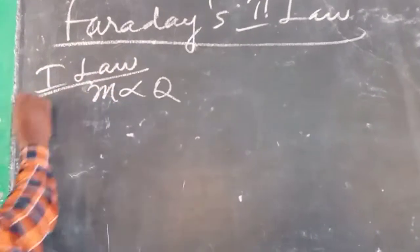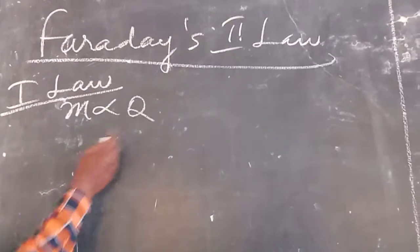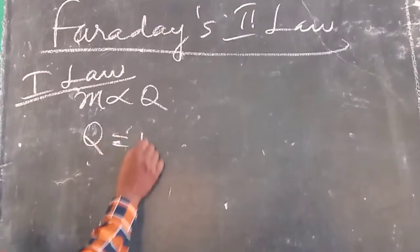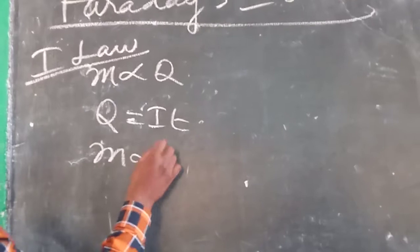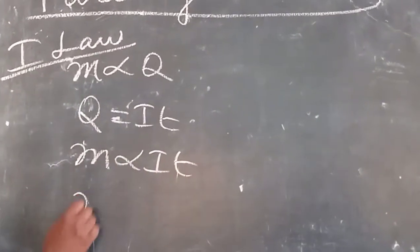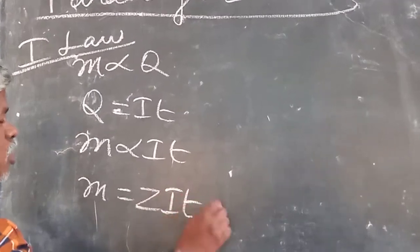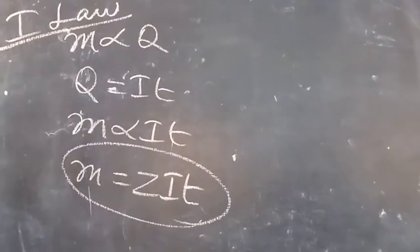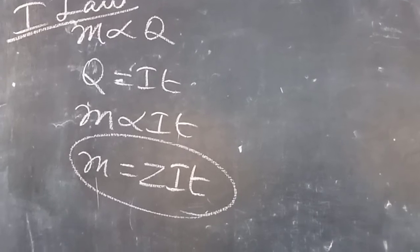The second law: M is proportional to Q. Q is equal to I times T. So M is proportional to I T. This is what is called the first law.